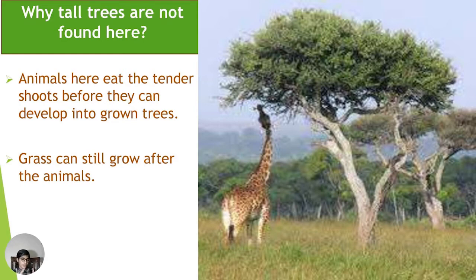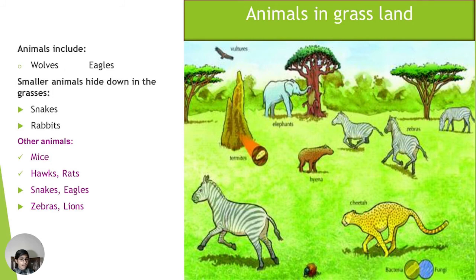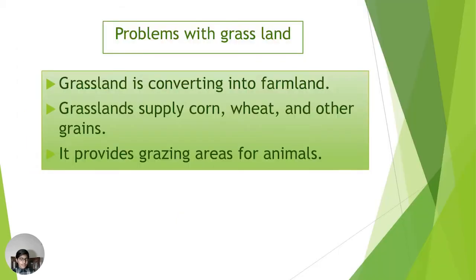Animals in grassland: Permanent residents include wolves and eagles. Smaller animals that hide in the grass include snakes and rabbits. Other animals include mice, hawks, zebras, and lions. The whole food chain can be found represented in the grassland ecosystem.